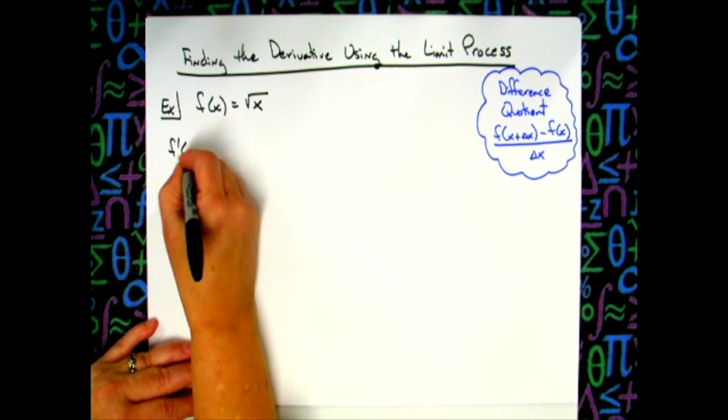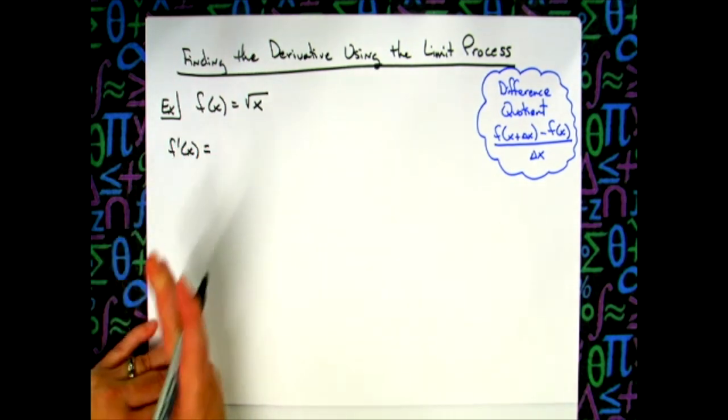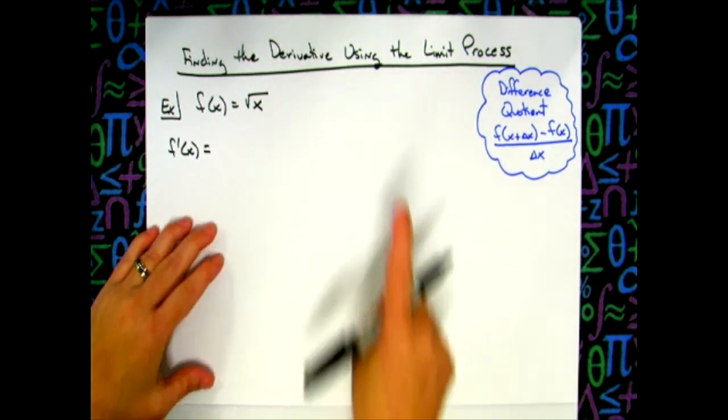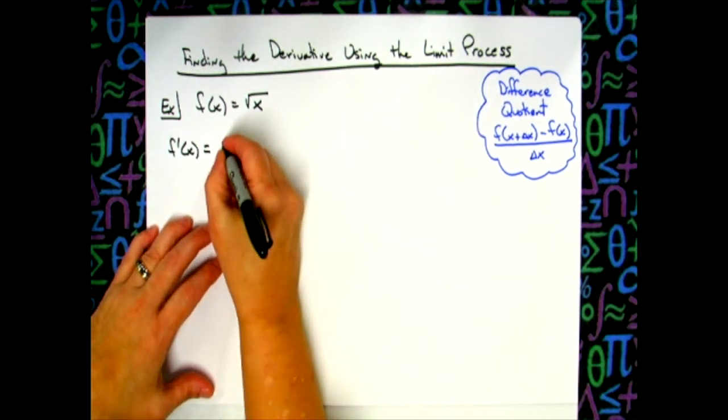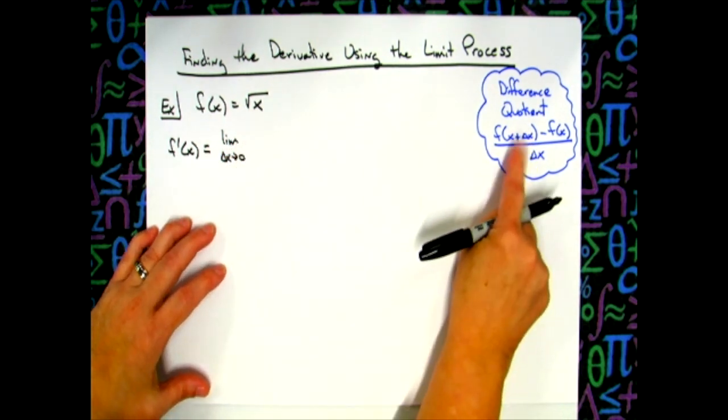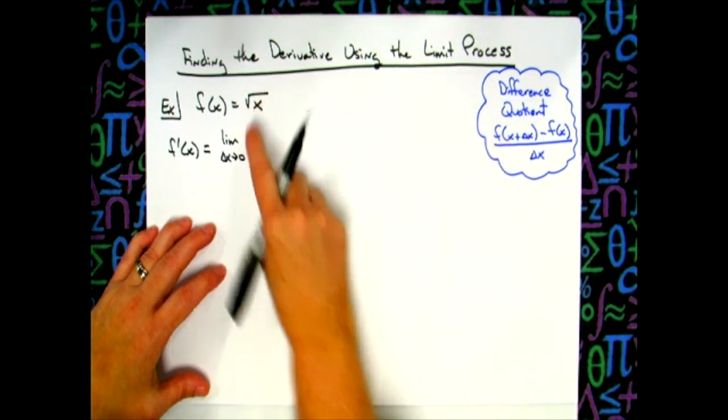So f prime of x tells whoever's looking at my work that I'm getting ready to take the derivative. Now I'm going to use the limit process. So I'm going to have a limit here, the limit as delta x approaches zero, and then I've got to implement the difference quotient on this function.